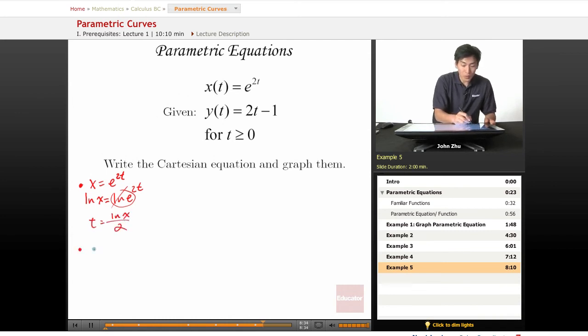And in step 2, we're going to plug in this t for the t in y. So 2 times ln of x over 2 minus 1, which simplifies to ln of x minus 1.